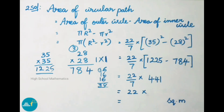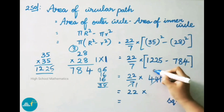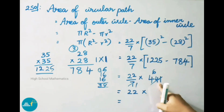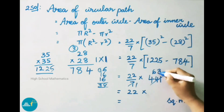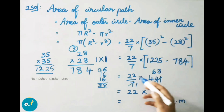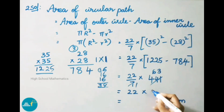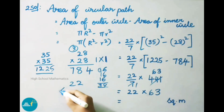Now cancellation: 7 table — 7 × 1 = 7; 7 × 6 = 42, carry 2; number becomes 21; 7 × 3 = 21. So 441 ÷ 7 = 63. Now we multiply 22 × 63.